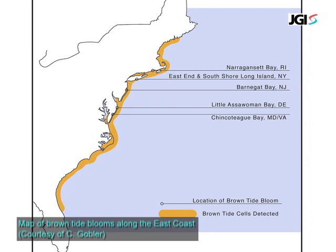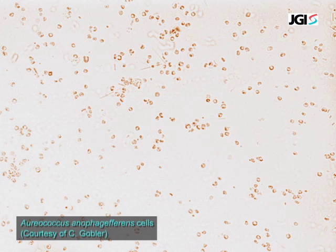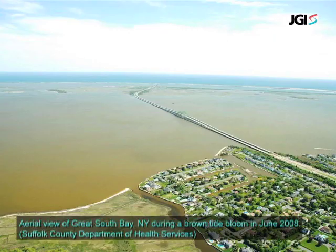Aureococcus anophagefferens is a marine phytoplankton well known for forming what we call brown tides in waters on the east coast of the U.S. and also in South Africa. The cells grow to great densities — billions of cells per liter — and when they do, they harm the ecosystem. They are known to be toxic to shellfish, and because they grow so dense and make the water so turbid, they prevent light from penetrating, which can also kill off aquatic vegetation.